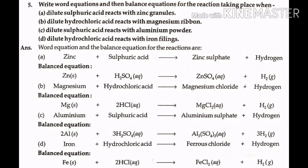Page number 32. Question number 5: Write word equations and then balanced equations for the reactions taking place. (a) Dilute sulfuric acid reacts with zinc granules. (b) Dilute sulfuric acid reacts with magnesium ribbon. Word equation (a): Zinc + sulfuric acid → zinc sulfate + hydrogen. Balanced equation: Zn(s) + H2SO4(aq) → ZnSO4(aq) + H2(g). (b): Magnesium + hydrochloric acid → magnesium chloride + H2. Balanced equation: Mg(s) + 2HCl(aq) → MgCl2(aq) + H2(g).